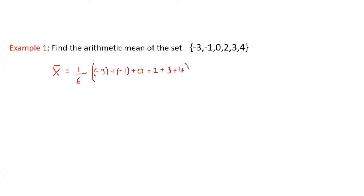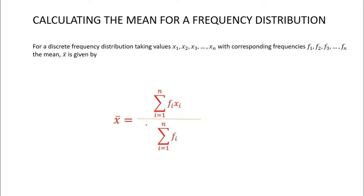And so now for calculating the mean for a frequency distribution, we have x bar is equal to the summation of f_i x_i, i sums from 1 up to n, over the summation of f_i, where f is our frequency and x_i is our values, our x values.